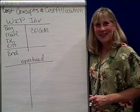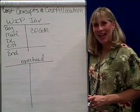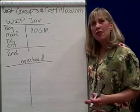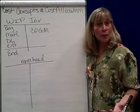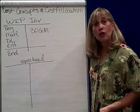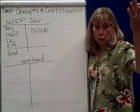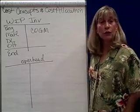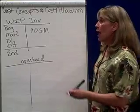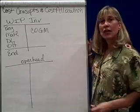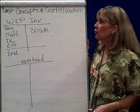We're covering cost concepts and cost allocation in managerial accounting. We've been talking about the manufacturing income statement, specifically cost of goods manufactured and sold, and how you view that as a report or in the T-accounts. One of those T-accounts is work in process inventory.